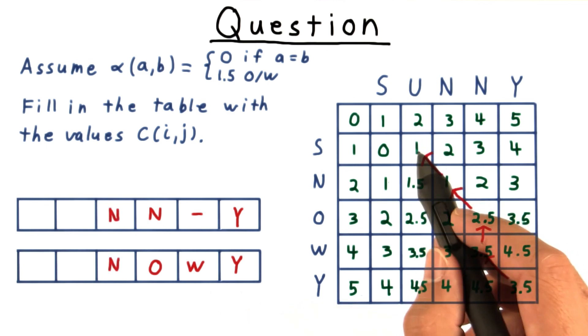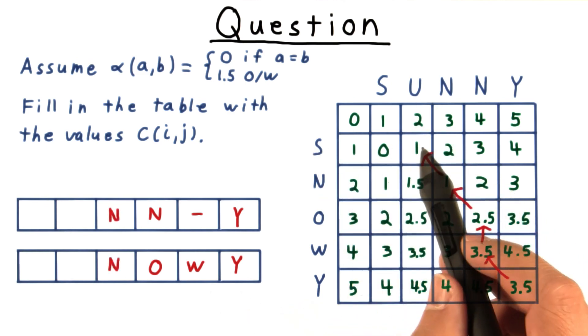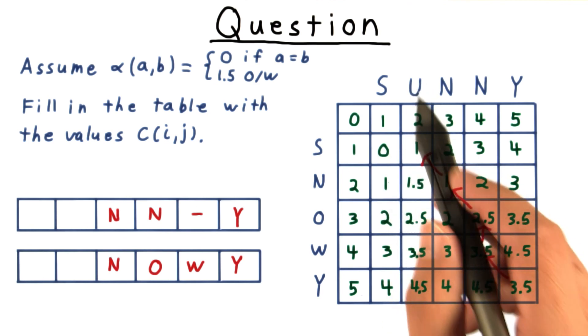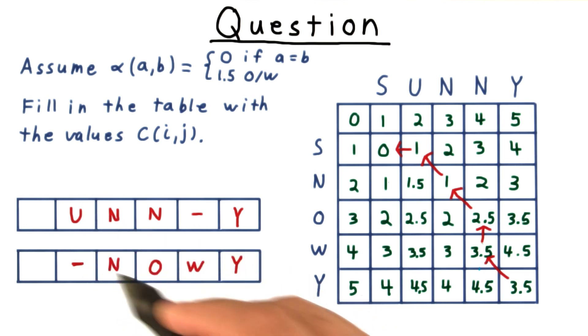Again, we have a cost of 1, and since u doesn't match s, this must have come from the west neighbor, meaning that u is left unmatched. And we can write that down like so.